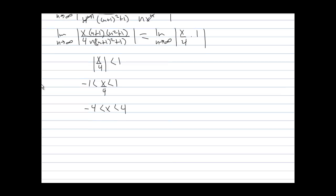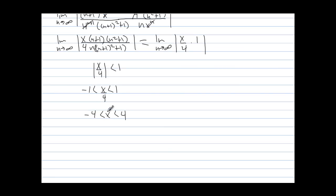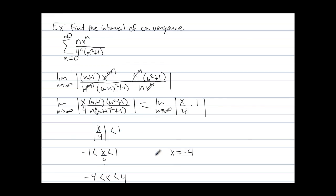But series can fail to converge at their endpoints, so we have to check them. Starting with the endpoint x equals negative 4: if we plug negative 4 into the original series, we have the sum from n equals 0 to infinity of n times negative 4 to the n over 4 to the n times n squared plus 1.